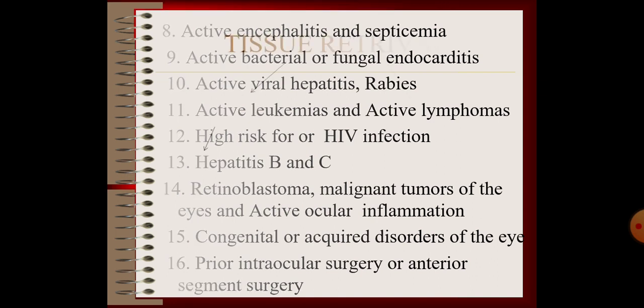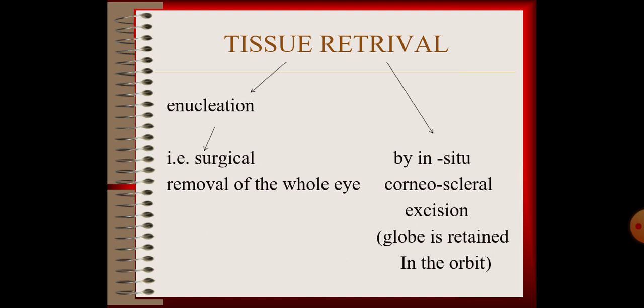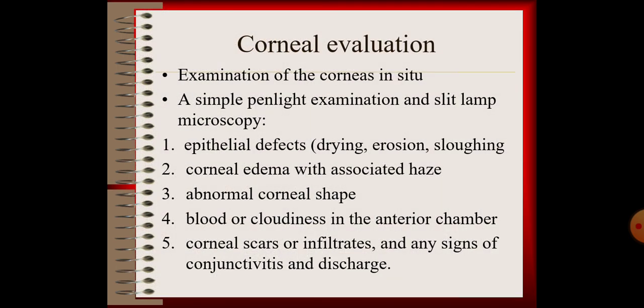Next, tissue retrieval. That is enucleation — the surgical removal of the whole eye. Alternatively, by in situ corneoscleral excision, the globe is retained in the orbit. Next, corneal evaluation: examination of the cornea in situ, using simple penlight examination and slit lamp microscopy to detect epithelial defects, drying, erosion, sloughing, corneal edema, abnormal corneal shape, blood or cloudiness in the anterior chamber, corneal scars or infiltrates, and any signs of conjunctivitis or discharge.